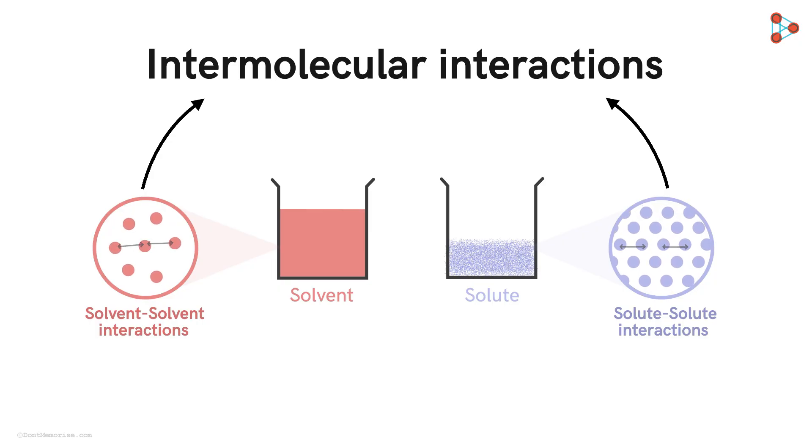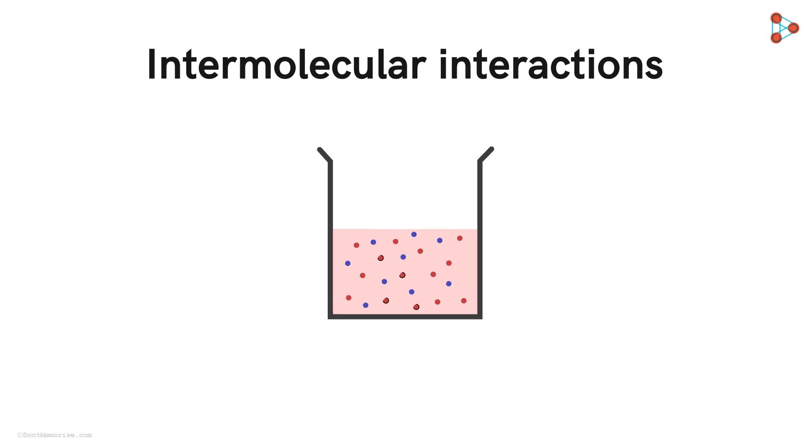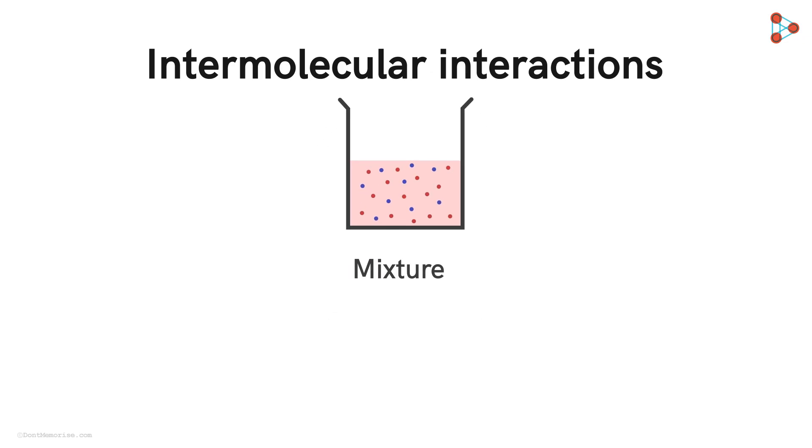Now, let's try to mix the two substances. We can see that here, the solvent molecules and the solute molecules will get a chance to interact with each other. So in the mixture, there will be three kinds of interactions: solvent-solvent, solute-solute and solvent-solute.